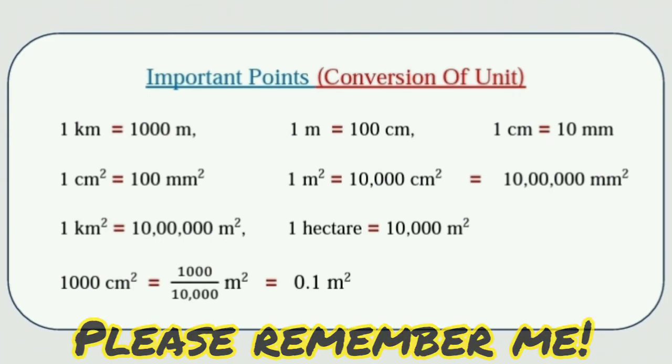Let's see some important points, i.e. conversion of units from this section. Here, 1 km is equal to 1000 m, 1 m is equal to 100 cm, and 1 cm is equal to 10 mm.